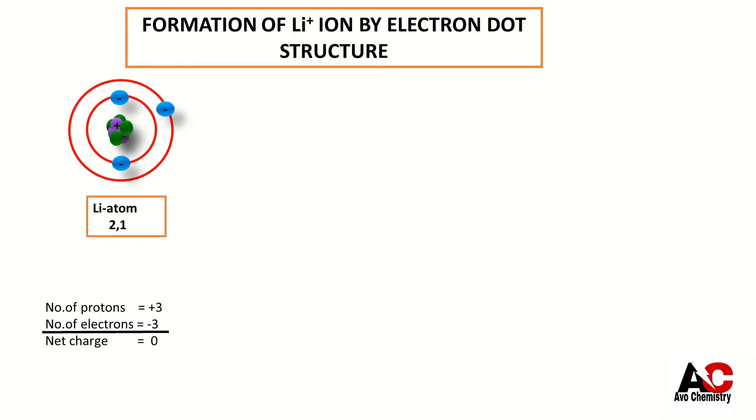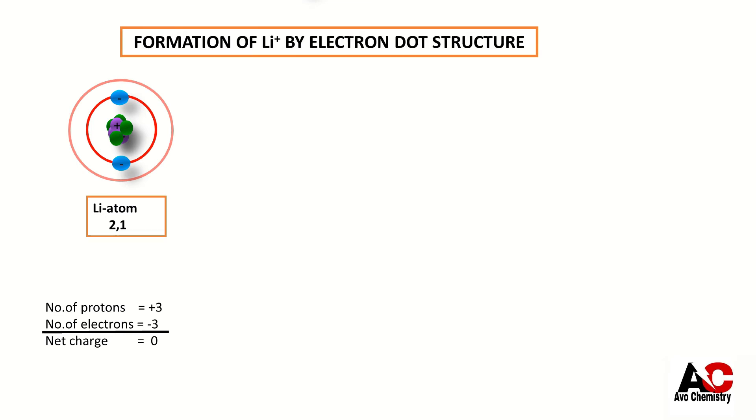So lithium atom removes this one electron in order to get stability. After removing the electron, lithium atom will be like this.